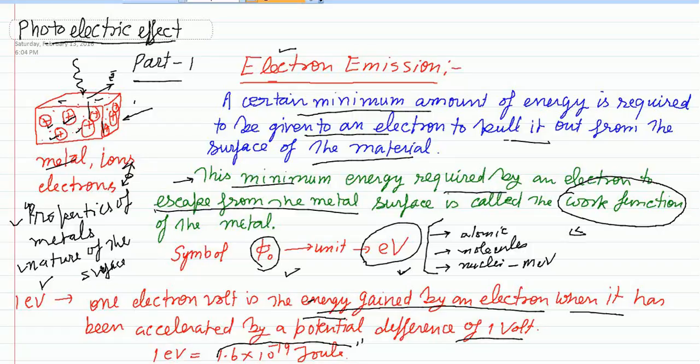In this section, the focus has been on the emission of the electron — what it means — and the definition of the work function, which we measure in terms of electron volts. The work function is the energy required by an electron to escape from the metallic surface.